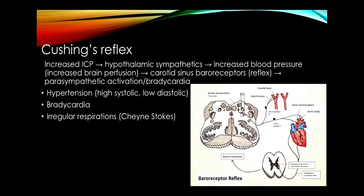Cushing's reflex: increased intracranial pressure activates hypothalamic sympathetics, raising blood pressure and pulse. This activates carotid sinus baroreceptors, feeding back to the dorsal motor nucleus of the vagus, dropping the pulse. The result is high blood pressure (high systolic, low diastolic), low heart rate, and irregular respirations — a neurologic emergency indicating increased ICP requiring a STAT head CT.